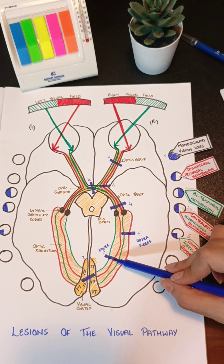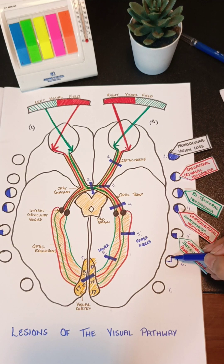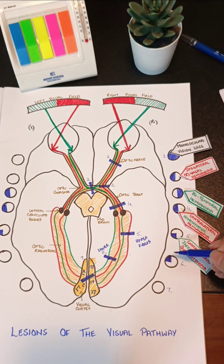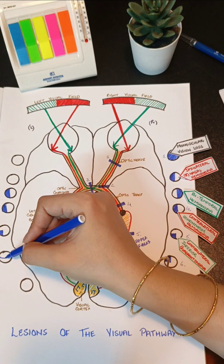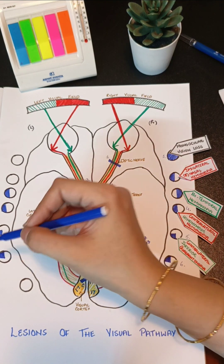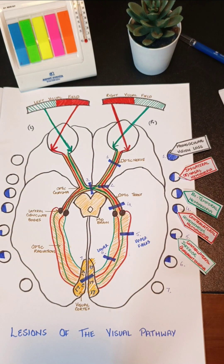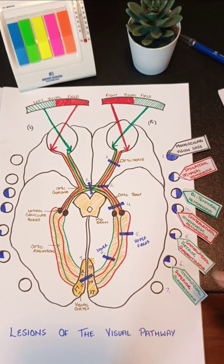Similarly, a lesion of the lower fibers of the optic radiations will cause contralateral superior quadrantanopia — loss of the superior quadrant field of vision. This is condition number six.